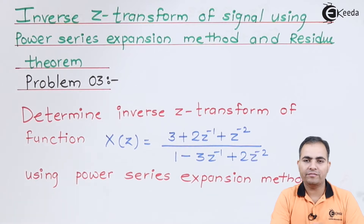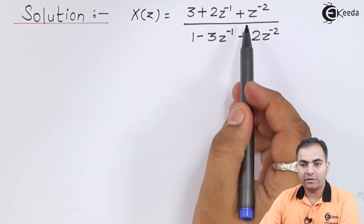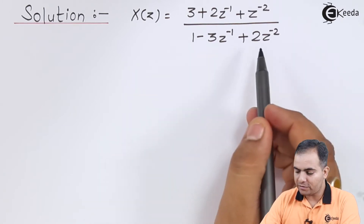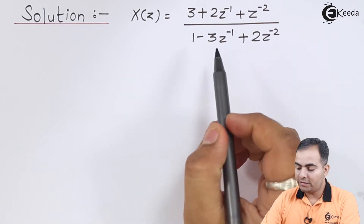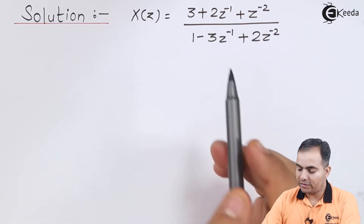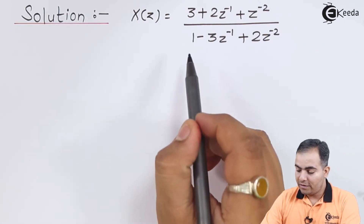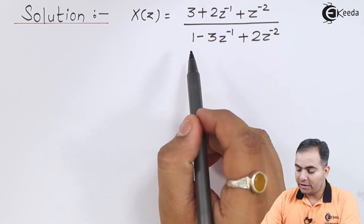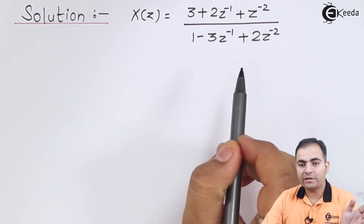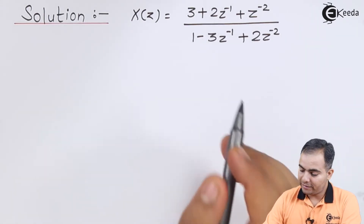Let us move on to the solution. My X of Z is (3 + 2Z⁻¹ + Z⁻²) in the numerator and (1 - 3Z⁻¹ + 2Z⁻²) in the denominator. Since we assume a causal sequence, we arrange the denominator from higher power of Z to the lower power of Z, and then divide the numerator.